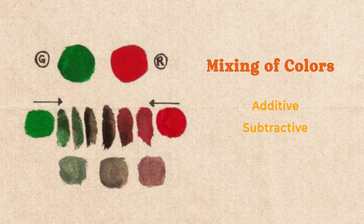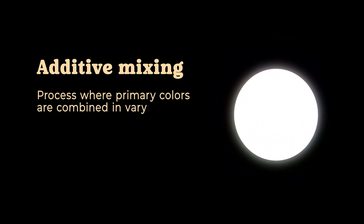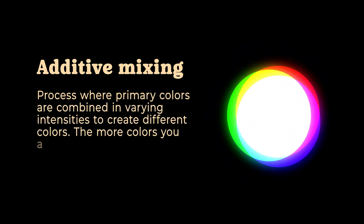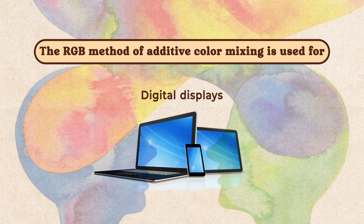Now let's talk about mixing colors with two primary methods called additive and subtractive mixing. Newton's experiments with white light revealed that colors behave differently depending on the medium. Thomas Young and Hermann von Helmholtz showed that red, green, and blue combined to create white light, creating the groundwork for both the RGB model and the concepts of additive and subtractive mixing. Additive mixing is a process where primary colors are combined in varying intensities to create different colors — the more colors you add, the lighter the outcome becomes. When all primary colors are combined at full intensity, they produce white light. This additive color mixing technique is unique to light-based systems like the RGB model, used for digital displays like computers or smartphones.